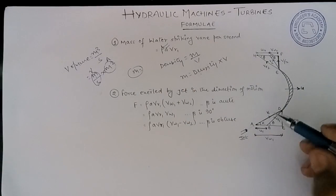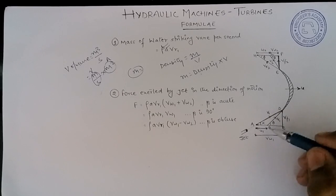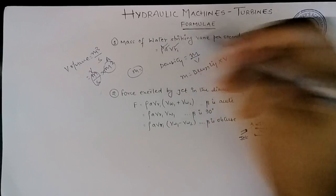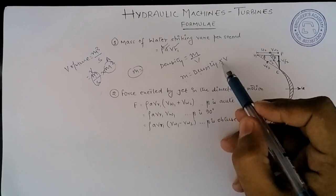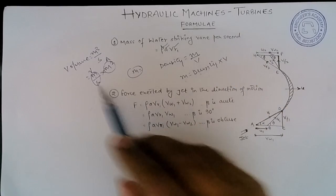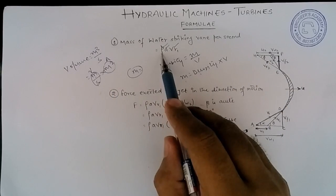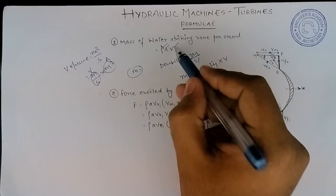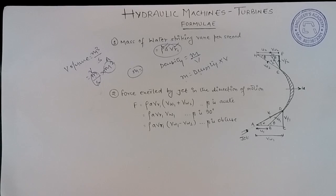The velocity here is the jet striking the vane, which is vr1 — the relative velocity. So mass equals density into area into velocity, i.e., ρ × A × vr1. This is the formula for mass of water striking vane per second.